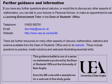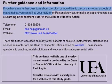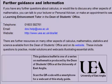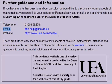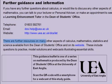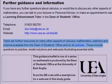Further guidance and information: If you have any further questions about calculus, or would like to discuss any other aspects of mathematics, you can talk to your lecturer or personal adviser, or make an appointment to see a Learning Enhancement Tutor in the Dean of Students Office. Telephone 01603 592761. Email dos.help@uea.ac.uk. Visit our website at www.uea.ac.uk/dos/let. There are further resources on many other aspects of calculus, mathematics, statistics and science available from the Dean of Students Office and on its website, including questions to practice, model solutions and webcasts illustrating essential skills.